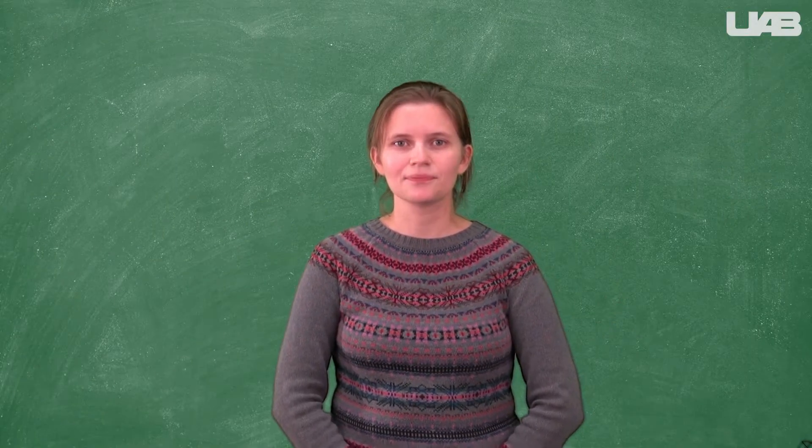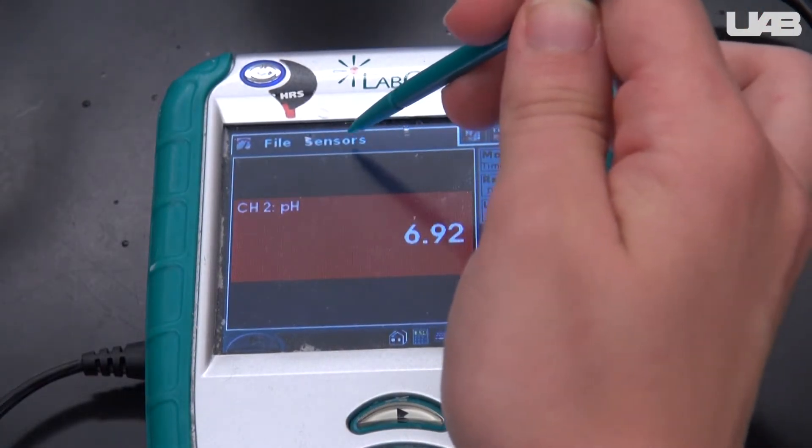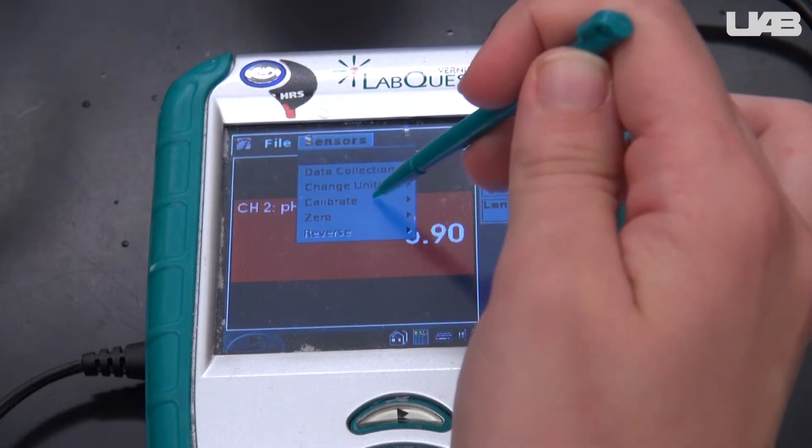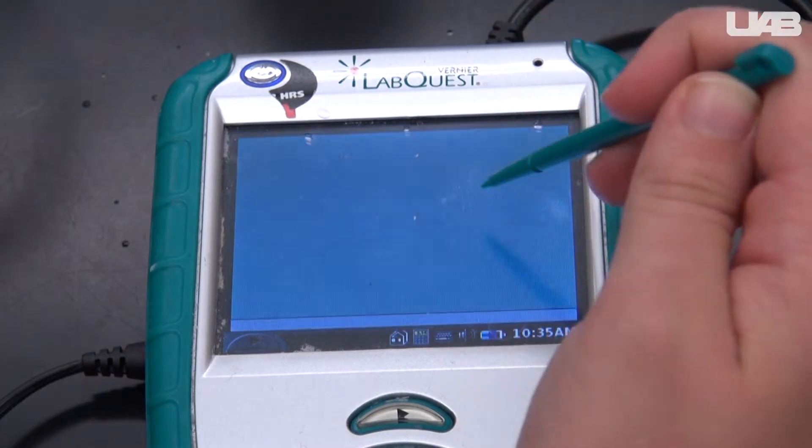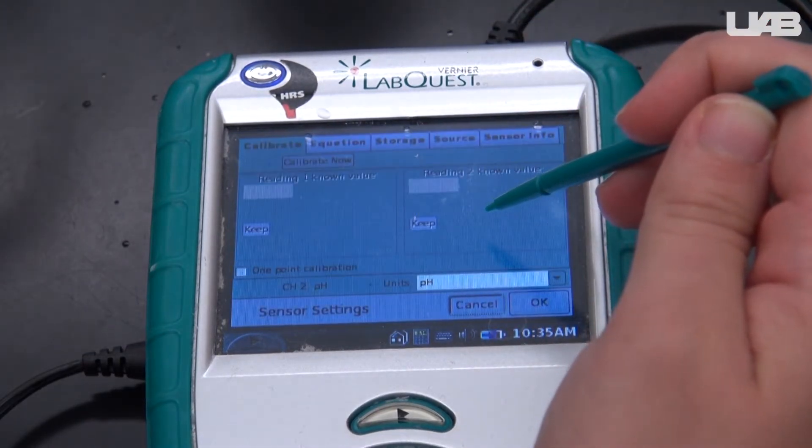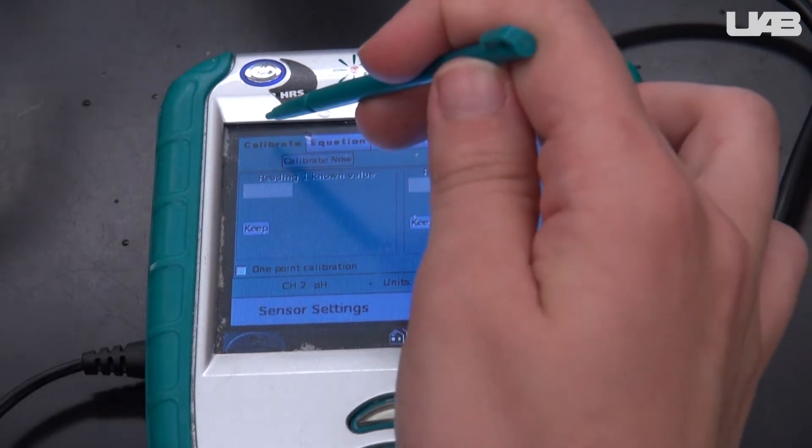Then look at the pH meter. Select Sensors to open the drop down menu. Then select Calibrate. Then click the box that pops up to the side. A new screen will appear. Select Calibrate now.